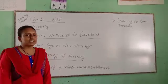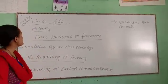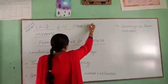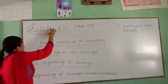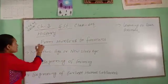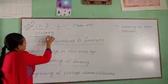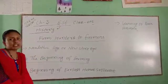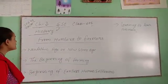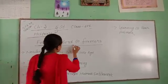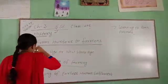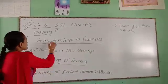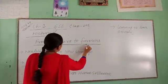Good morning, students of class 6. Today I am going to teach you chapter 3 of SST — the history part. Your chapter name is 'From Hunters to Farmers.' It means the early people had to change their hunter life into a farmer life.